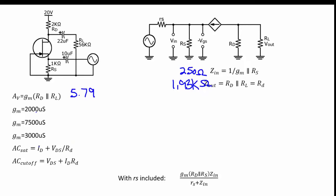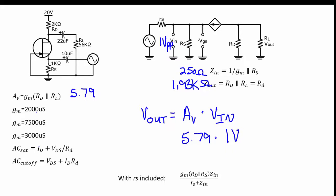With a gain of 5.79, when I build the circuit I intend to measure 1 V peak-to-peak at the actual input of the JFET. This makes calculations easier because we don't initially need to include the internal resistance of the source. Voltage out = gain × Vin = 5.79 × 1 V = 5.79 V out.